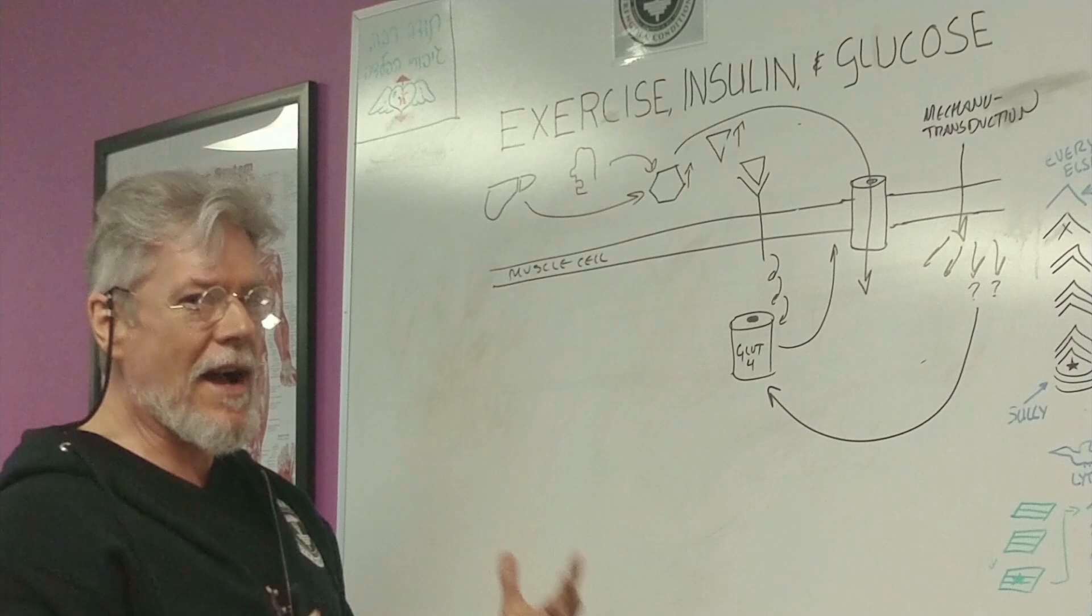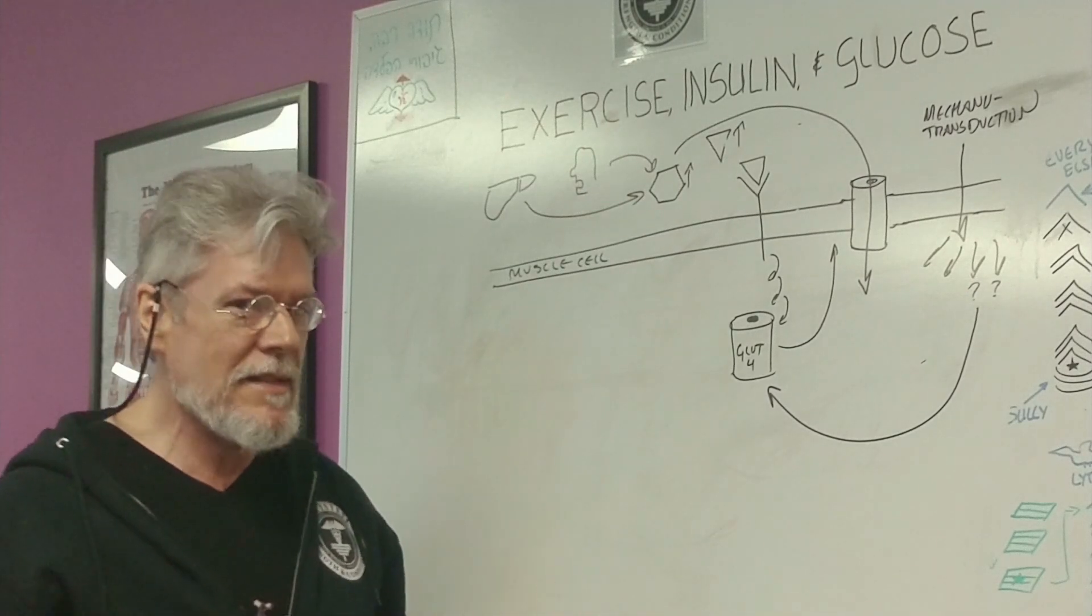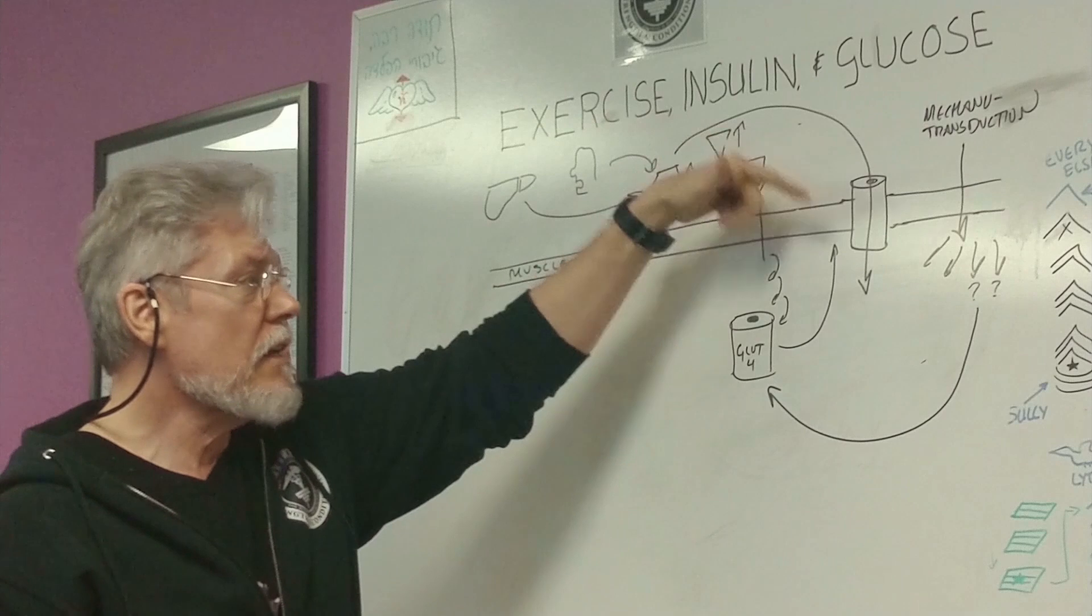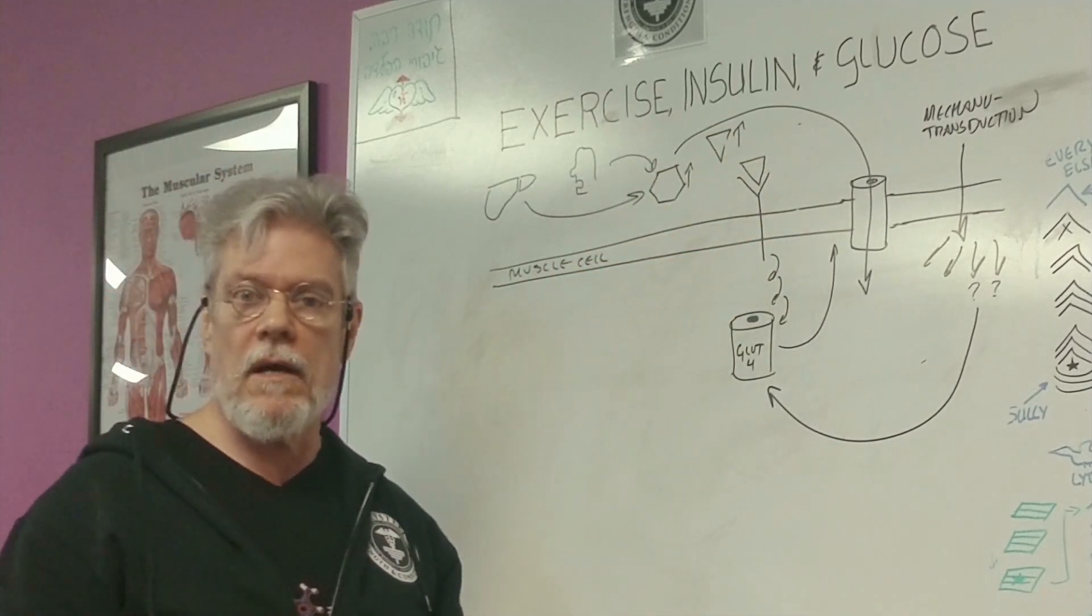In other words, exercise works kind of like insulin. Exercise is a hypoglycemic agent that allows glucose to get into the muscle cell independent of insulin signaling.